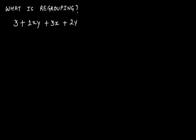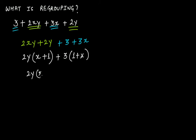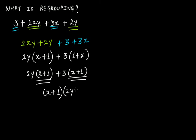In this case, group together 2xy and 2y. If you write this as 2xy plus 2y, and write the other part as 3 plus 3x — so this is 3 plus 3x. From the first group, take out 2y as the common factor; inside you get x plus 1. From the second group, take out 3; inside you get 1 plus x. Now x plus 1 means 1 plus x only, so you can write it as 2y times x plus 1 plus 3 times x plus 1.